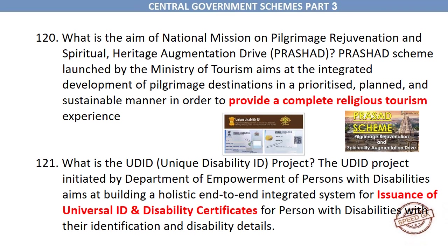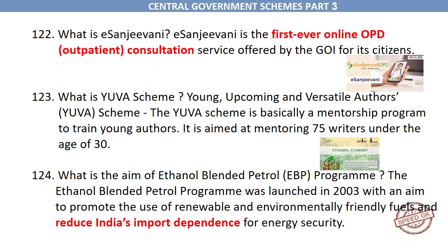What is the UDID (Unique Disability ID) project? The Unique Disability ID project, initiated by the Department of Empowerment of Persons with Disabilities, aims at building a holistic end-to-end integrated system for issuance of universal ID and disability certificates for persons with disabilities, with their identification and disability details. eSanjeevani is the first-ever online outpatient consultation service offered by the Government of India for its citizens.